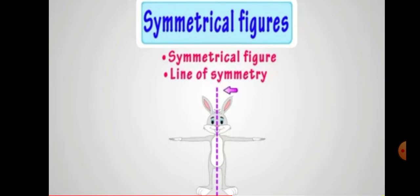Next is a rabbit. Again, you can see on left and right, both sides are exactly the same. So this figure is also a symmetrical figure, and this dotted pink line is known as the line of symmetry.